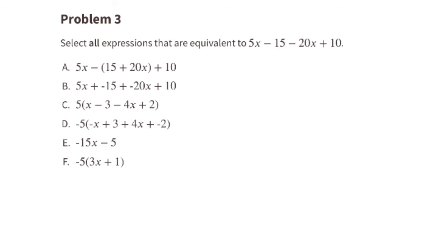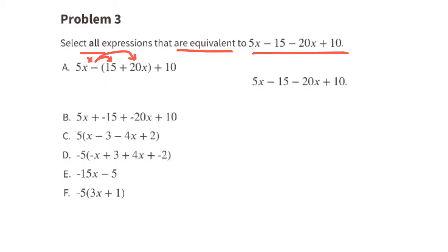Problem number 3. Select all expressions that are equivalent to 5x minus 15 minus 20x plus 10. Option A: a negative times a positive is a negative, and a negative times a positive is a negative, so we can rewrite this as 5x minus 15 minus 20x plus 10, which is equivalent to the original expression.